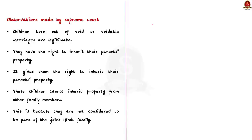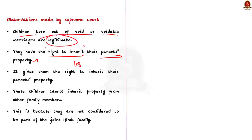The Supreme Court ruled that children born out of void or voidable marriages are legitimate and they have the right to inherit their parents' property. This means that they are considered to be legal children of their parents even though the marriage is not valid. This is important because it gives them the right to inherit their parents' property.